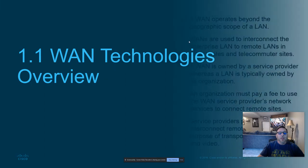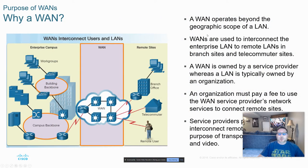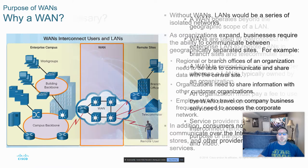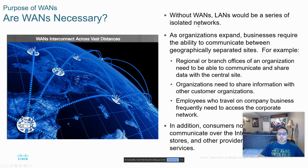I don't want this video to get too long. The first section covers just general characteristics of wide area networks. We know that they operate over larger geographic areas, typically connecting multiple LANs together. Most of the time, unless it's a pretty large corporation, we're going to be using the services of a provider, which are obviously going to be for a fee. WANs are necessary — without them, we wouldn't have any connectivity from LAN to LAN or any technology such as the Internet.